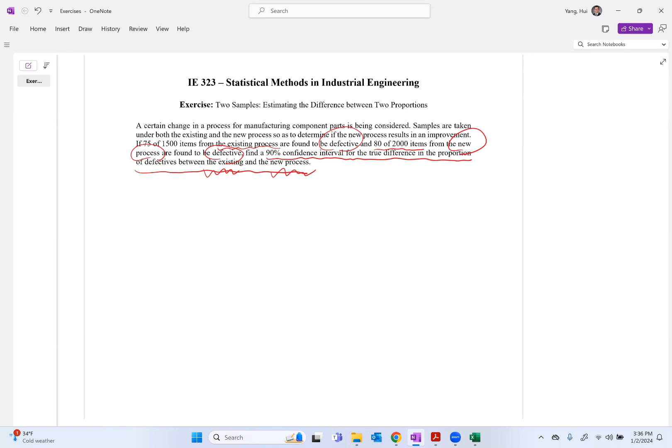From the class we know that if we want to establish the confidence interval on p1 minus p2, this will be p1 hat minus p2 hat plus minus z alpha over 2, and square root we have p1 hat times 1 minus p1 hat over n1 plus p2 hat times 1 minus p2 hat over n2.